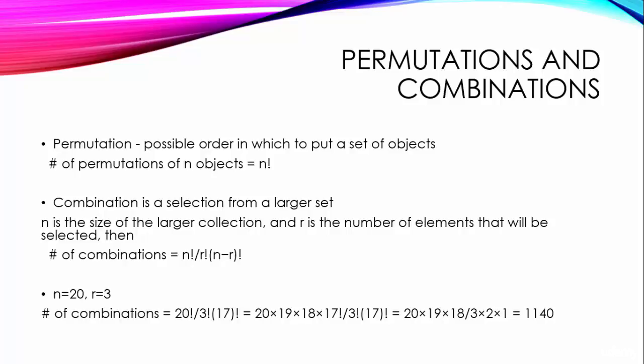Again, this looks complicated, but it gets simple very fast. In the question just posed, n is equal to 20, r is equal to 3, and n minus r is equal to 17. Therefore, number of combinations is equal to 20 factorial by 3 factorial into 17 factorial.